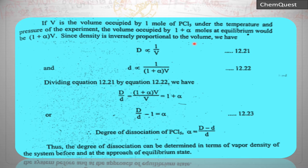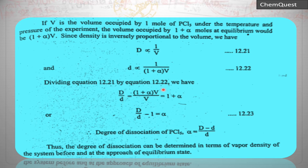Density is inversely proportional to volume. So D ∝ 1/V (before reaction), and small d ∝ 1/[(1 + α)V] (after dissociation). We now divide the first equation by the second to get D/d = (1 + α)V / V = 1 + α.